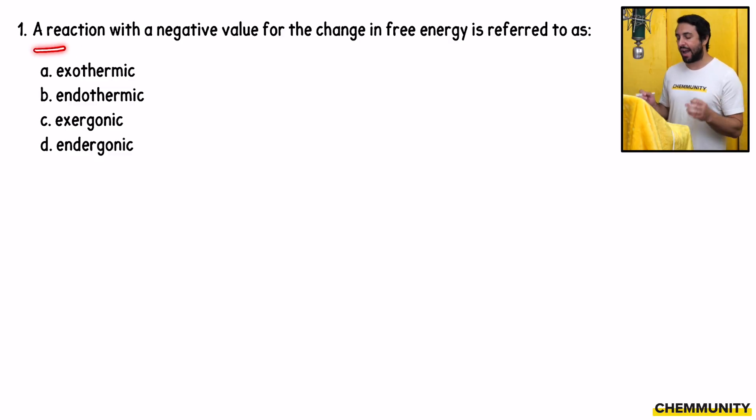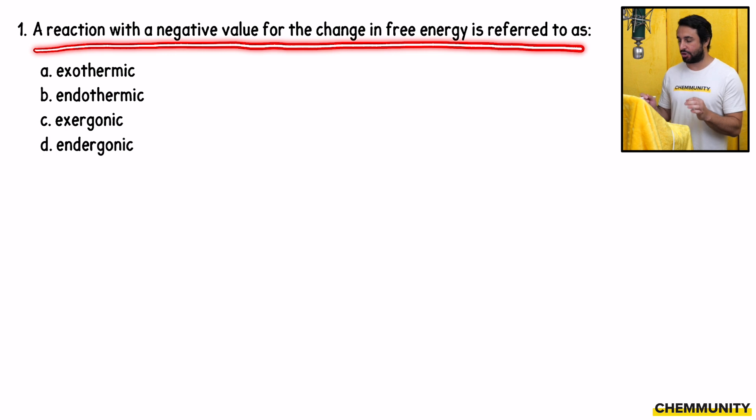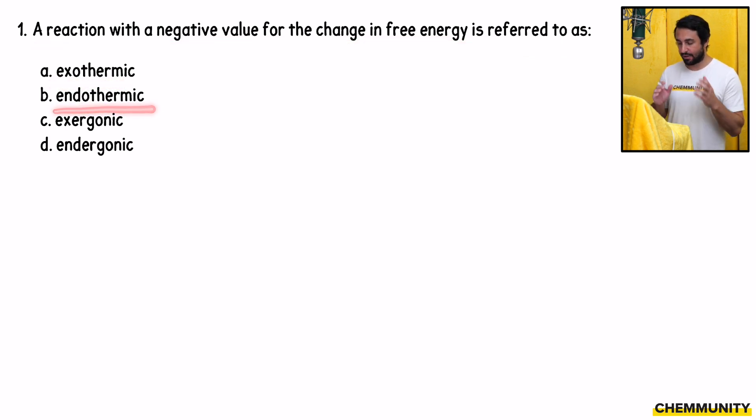Number one asks, a reaction with a negative value for the change in free energy is referred to as exothermic, endothermic, exergonic, or endergonic. So what are we talking about? We're talking about free energy. Gibbs free energy is associated with delta G, and we're looking for a negative value for this change.